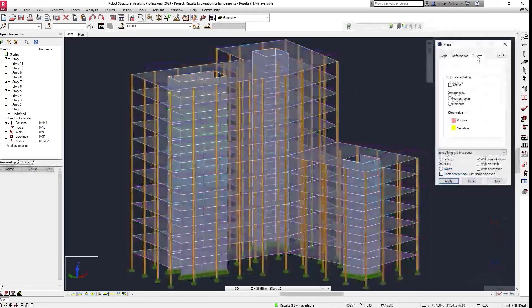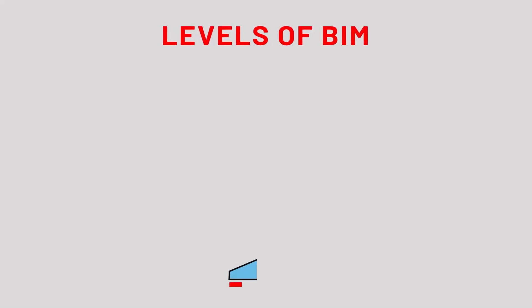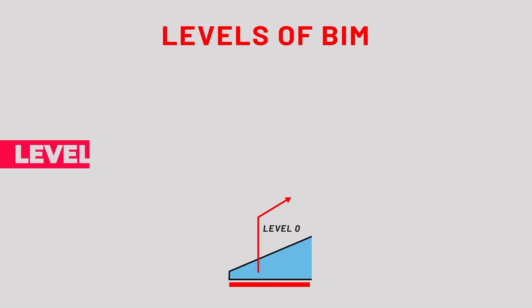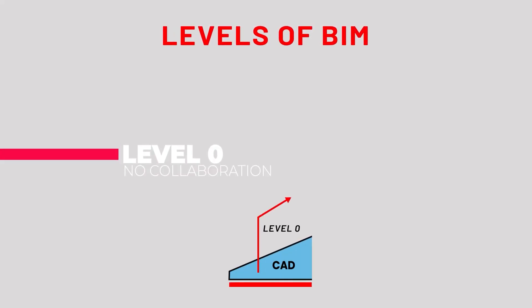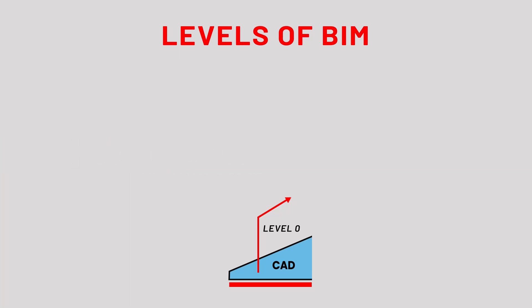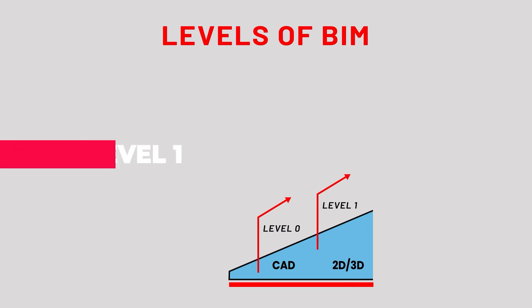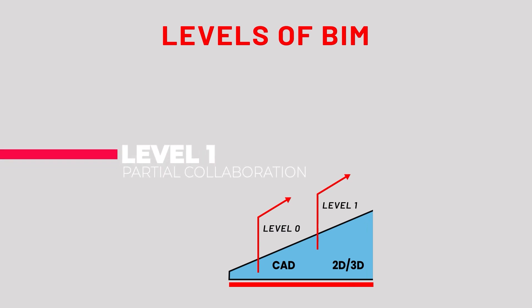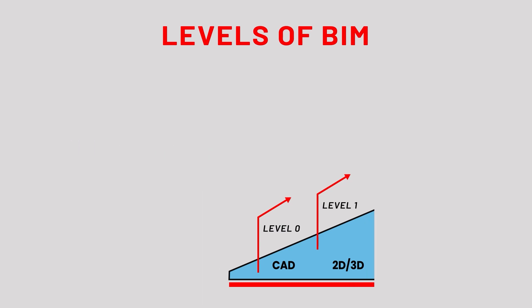Different levels of BIM can be achieved for various types of projects. Each level represents a different set of criteria that demonstrates a particular level of maturity. Starting from a 3D digital model, BIM models can be progressively filled with additional data.